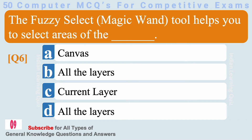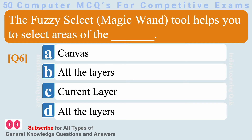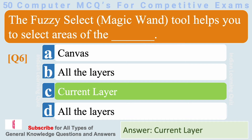The Fuzzy Select Magic Wand Tool helps you to select areas of the current layer. Answer: Current Layer.